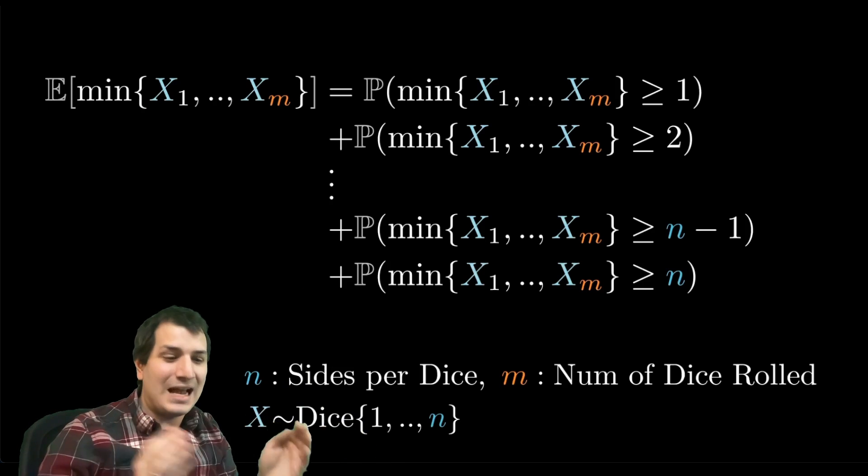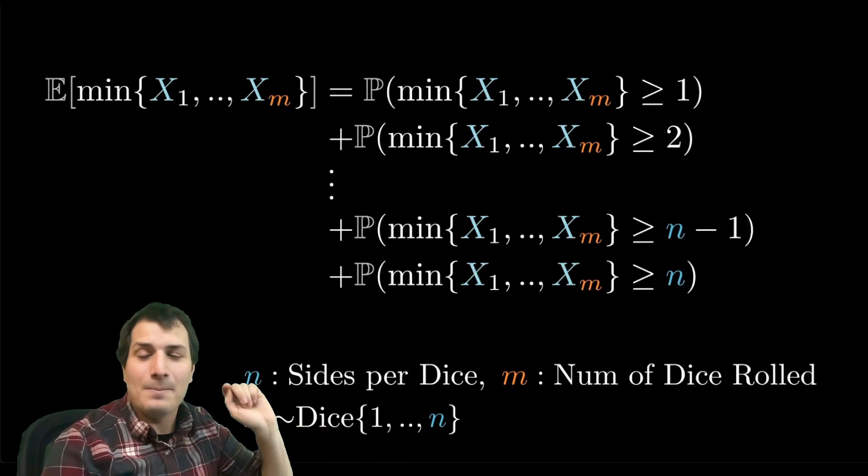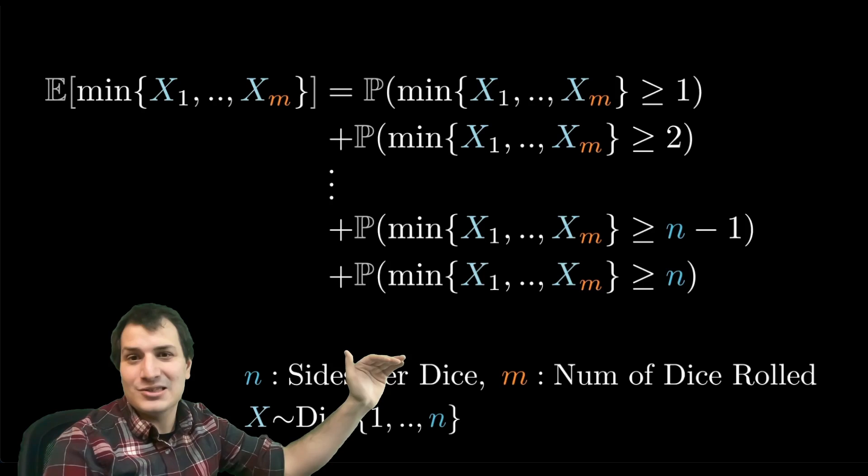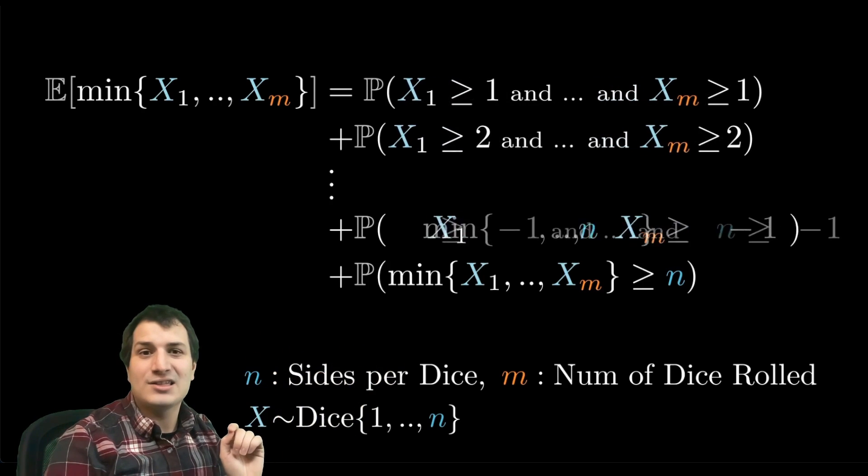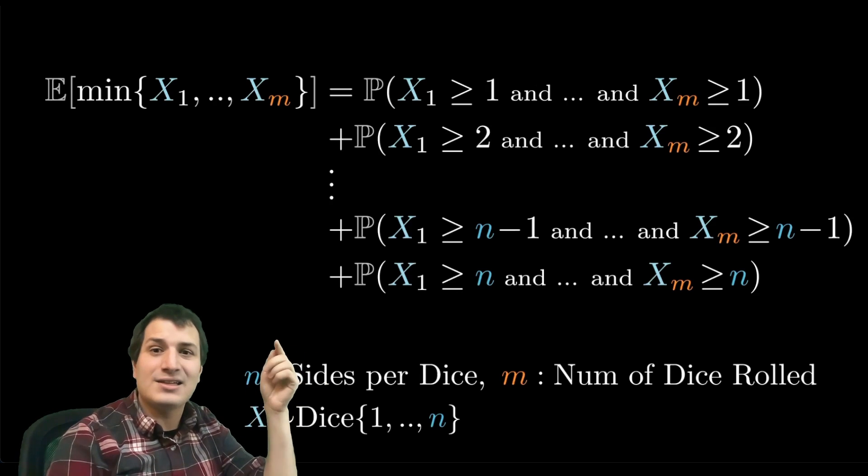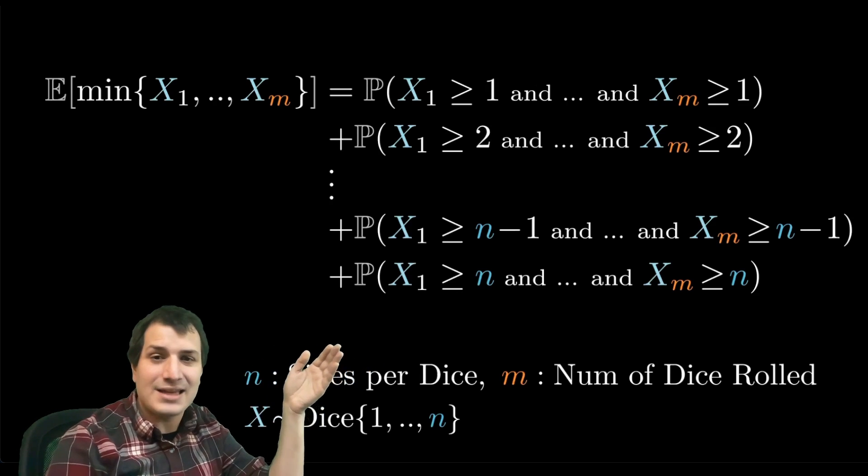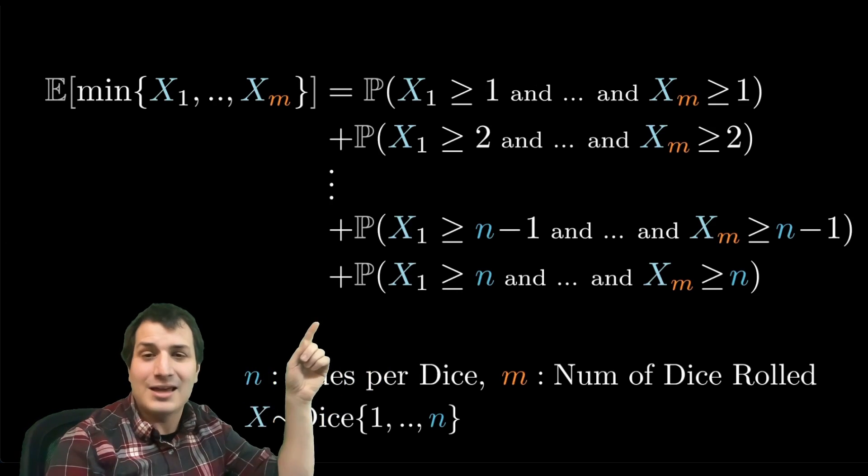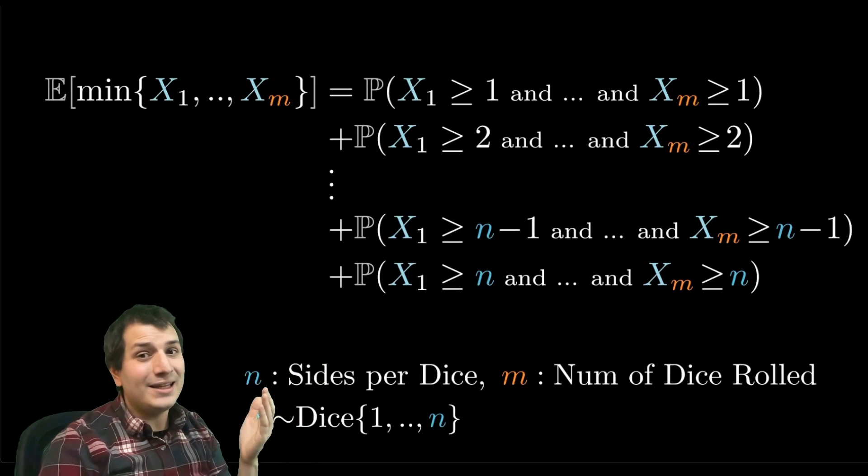Those are the exact same event, so we can replace these minimums with long sequences of AND statements. Every single dice roll has to be larger than the value we're talking about. You have x1 and x2 and x3 all the way up to xm all have to obey the same greater than sign.